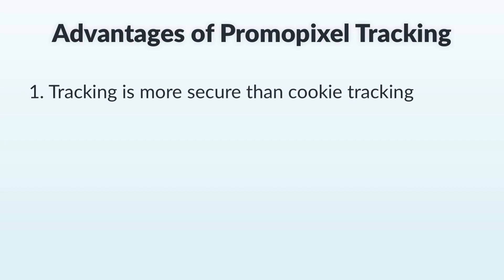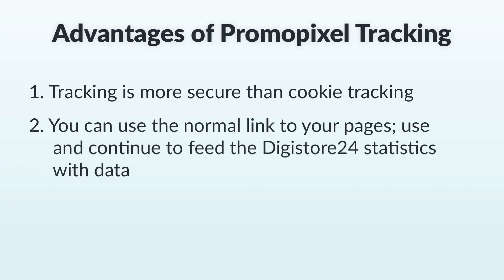The most important benefit of the promo pixel is that tracking is more secure. There are other advantages too. By default, every customer must come to your website via a promo link so that the Digistore24 analytics in the business cockpit or in the analytics receive all the necessary data to display the statistics correctly. This may seem a little strange to your customers at first glance as you're using a promo link and not a normal URL. But if you've integrated the promo pixel on your page, you can still use the normal URL as the promo pixel will still receive all the necessary data for the Digistore24 analytics.